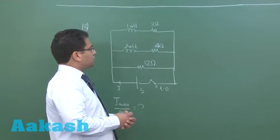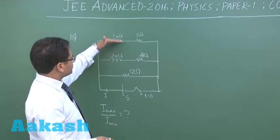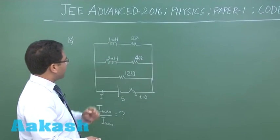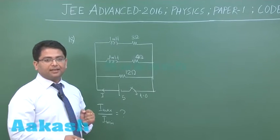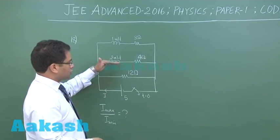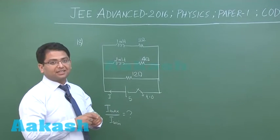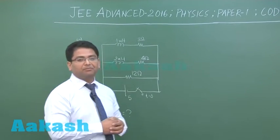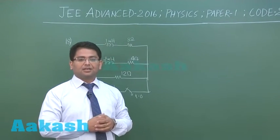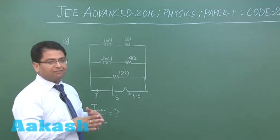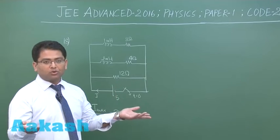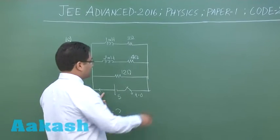It is very clear that initially the inductor would be behaving as open circuit and later on it would behave as short circuit. So later on the resistance would be less because all the resistances would come in parallel. Initially resistance is more so the current would be less.